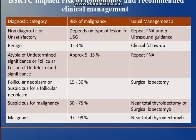For the third category — AUS/FLUS — since the significance is unclear, repeat FNAC should be done. For the fourth category — follicular neoplasm or suspicious for follicular neoplasm — surgical lobectomy is performed. For the fifth and sixth categories, mostly surgical treatment is done.